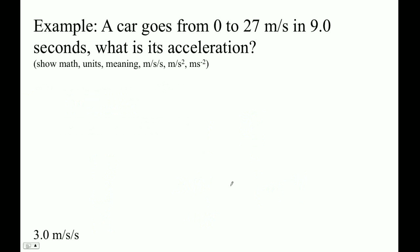Here's an example. A car goes from zero to 27 meters per second in nine seconds. What's its acceleration? So our acceleration is change in velocity over time. The change is from zero to 27 is positive 27 meters per second, and then it's in nine seconds.